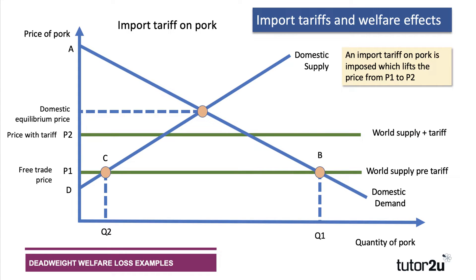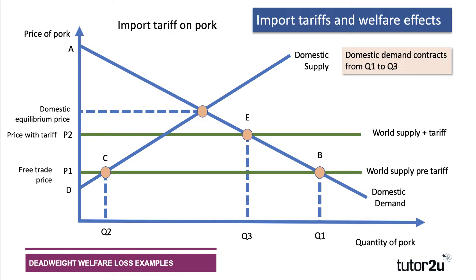A tariff adds to the import price — we tax imports, a duty on customs coming in. Let's assume the price goes up to P2, so the tariff is the vertical distance between those two green lines. As a result of the tariff, domestic demand for pork will contract from Q1 to Q3, as high prices mean people can't afford to buy as much in real terms. Domestic producers are better able to supply pork, so they'll expand production from C to F, moving up their supply curve, with production expanding from Q2 to Q4. The import quantity falls to Q4, Q3.